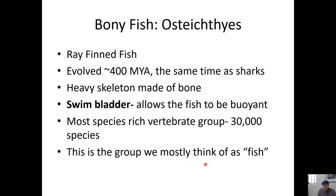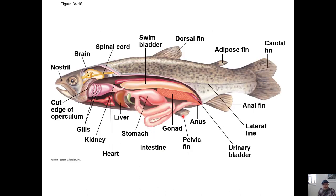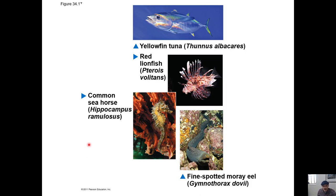The ray-finned fish are a very diverse group, and this is the group that most of us think of when we say 'fish.' Here's a diagram of one of these fish showing the different parts — there's that swim bladder, a two-chambered heart, and a complete digestive tract. Everything from tuna, to seahorses, to eels — all of these are ray-finned fish.